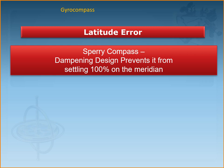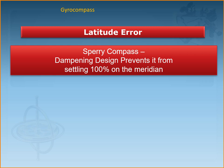Let me start with the latitude error. As the vessel proceeds from the equator towards higher latitudes, whether north or south, the gyro compass experiences certain forces. The Coriolis force is minimum — almost zero — at the equator, and it increases as you go towards the poles. So as the vessel proceeds towards higher latitudes, the Coriolis force acting on the gyro compass also starts to increase.